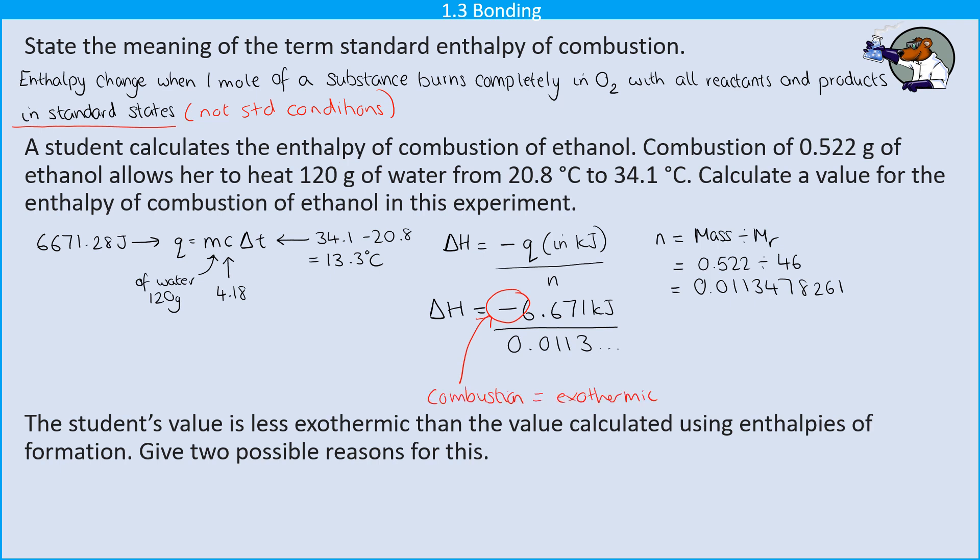The reason that it's going to be a negative value is that combustion is always exothermic. And so I'm going to get a value of minus 587.89057 kilojoules per mole. And then I need to round this to an appropriate number of significant figures. So this time it's going to be three significant figures because my masses in the question and also my temperatures in the question are given to three significant figures.